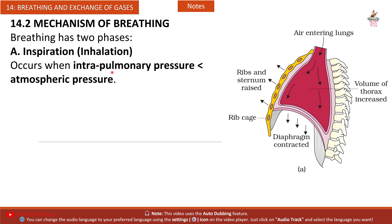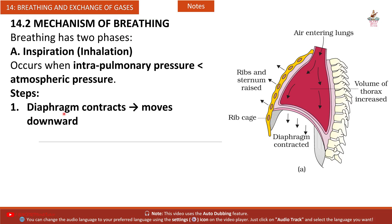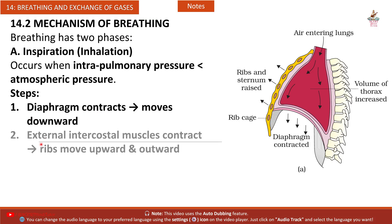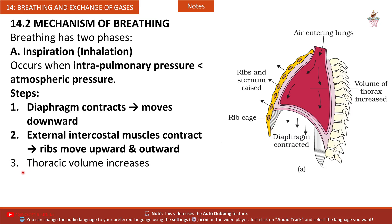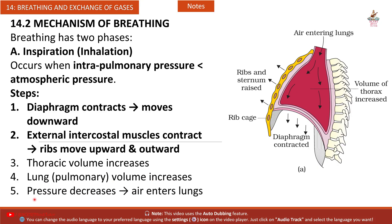Section 14.2 — Mechanism of Breathing. Inspiration (inhalation) occurs when intra-pulmonary pressure is less than atmospheric pressure. Steps: First, the diaphragm contracts and moves downward. Second, external intercostal muscles contract — ribs move upward and outward. Third, thoracic volume increases. Fourth, lung (pulmonary) volume increases. Fifth, pressure decreases and air enters the lungs.